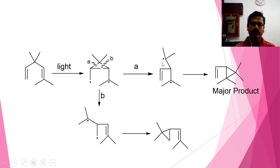When these two carbon atoms — the free radicals — recombine, you get the major product.